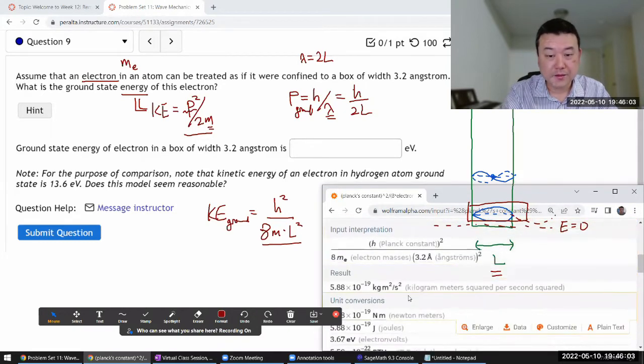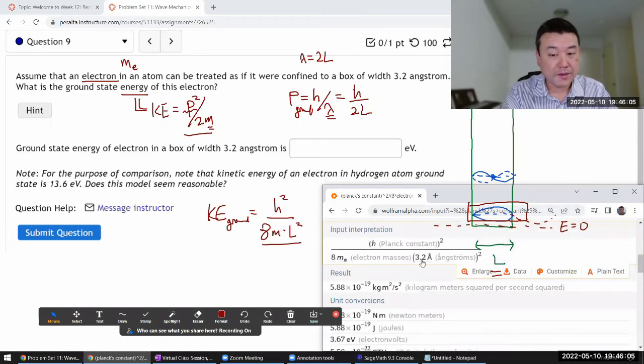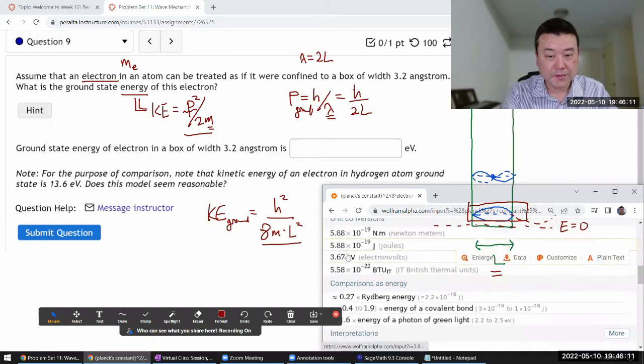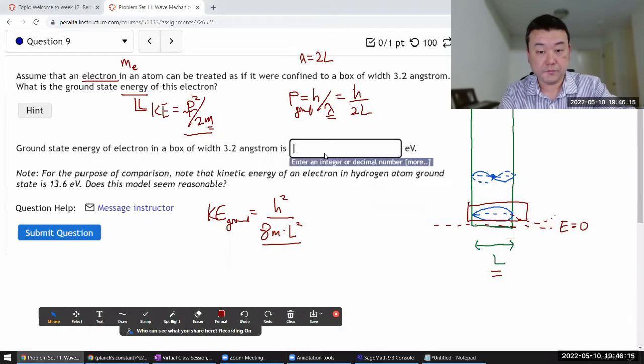Okay, H is Planck's constant. Electron masses. Yeah. 3.2 angstrom. Okay, it looks good. I need energy in electron volts. 3.67 electron volts. 3.67.